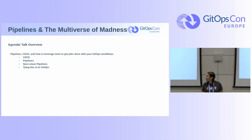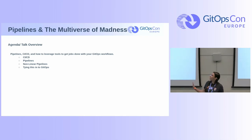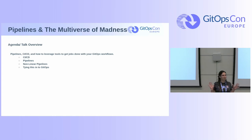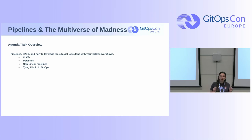Brief agenda today: we're going to keep this all pretty high level and conceptual. We're going to talk about CI/CD, we're going to talk about pipelines, we're going to talk about non-linear pipelines, and then we're going to tie all of that back into GitOps.